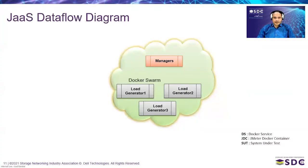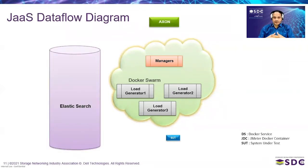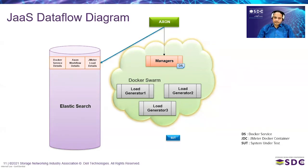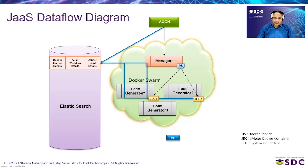In more detail: when the user submits a job through Axon to Docker Swarm, a Docker service is created specifying how many container replicas are needed. Containers are created across nodes in a distributed, load-balanced way. Axon also stores Docker service information, workflow information, and JMeter script information in the database.